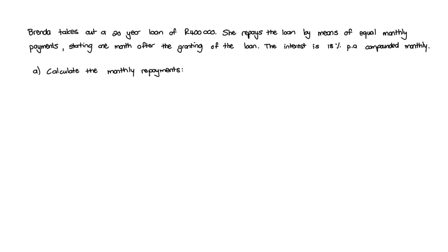The question reads as follows. Brenda takes out a 20-year loan of 400,000 Rand. She repays the loan by means of equal monthly payments starting one month after the granting of the loan. The interest rate is 18% per annum compounded monthly.